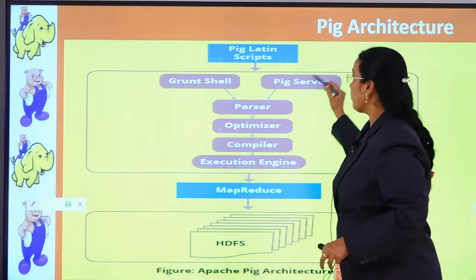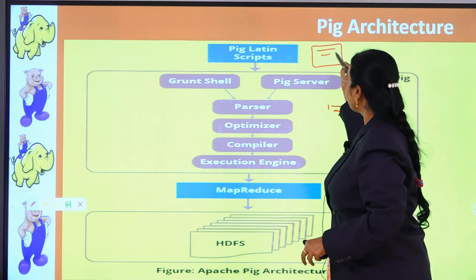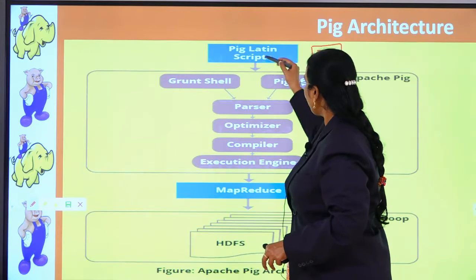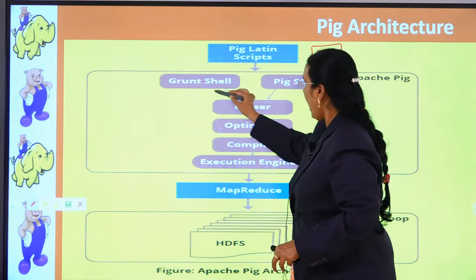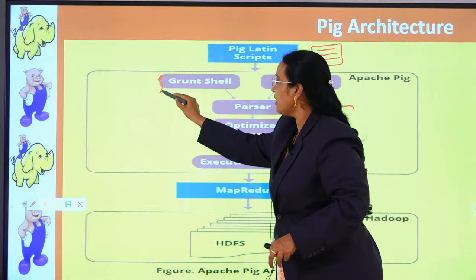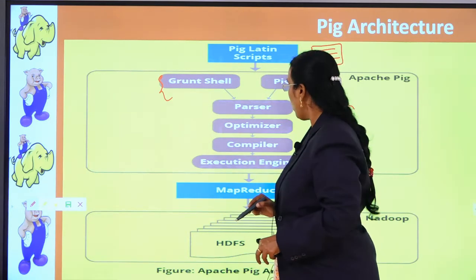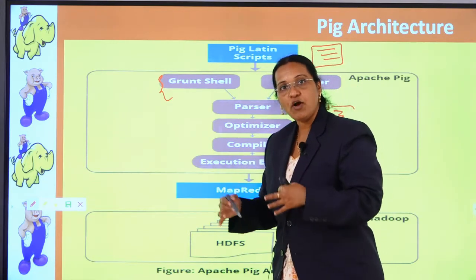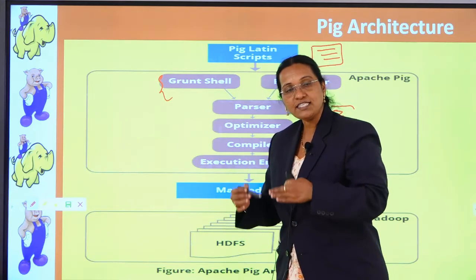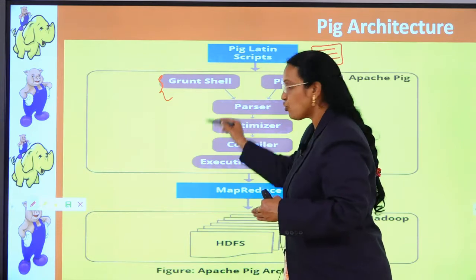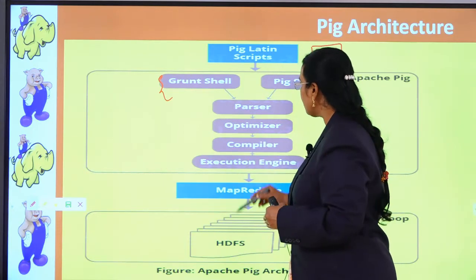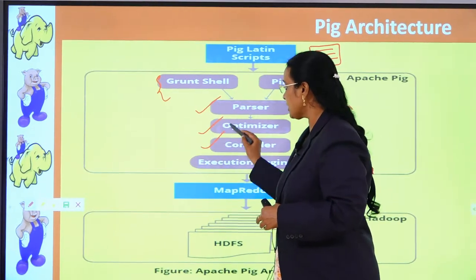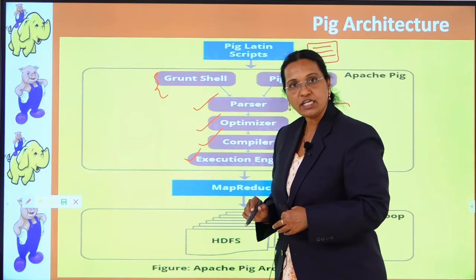Let us assume we are using a Pig Latin script. The programmer writes a script containing all the Pig commands, and it enters the Pig server. Internally, there is a Grunt shell acting as a shell mode. Whatever Pig script you have written goes through various stages: parsers, optimizers, compilers, and execution engine.